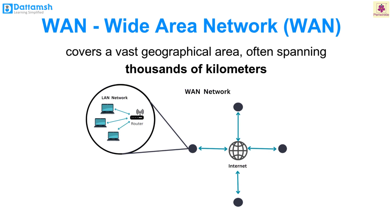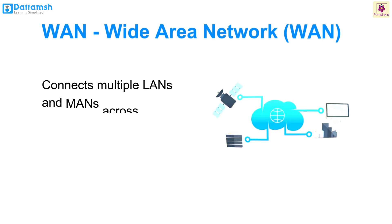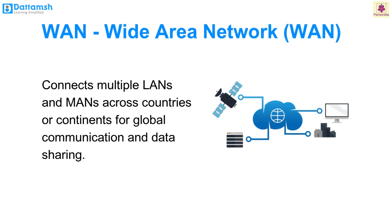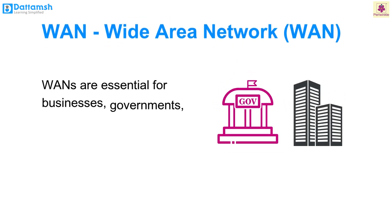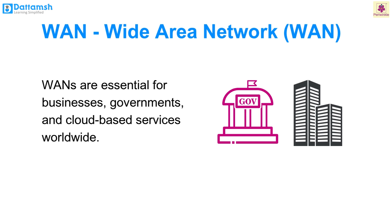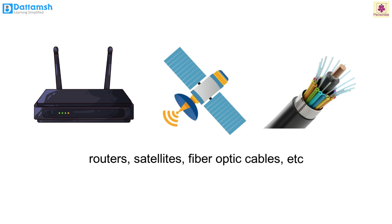A Wide Area Network (WAN) covers a vast geographical area, often spanning thousands of kilometers. It connects multiple LANs and MANs over large geographical areas like countries or continents, enabling global communication and data sharing. WANs are essential for businesses, governments and cloud-based services worldwide. WANs are set up with routers, satellites and fiber optic cables.